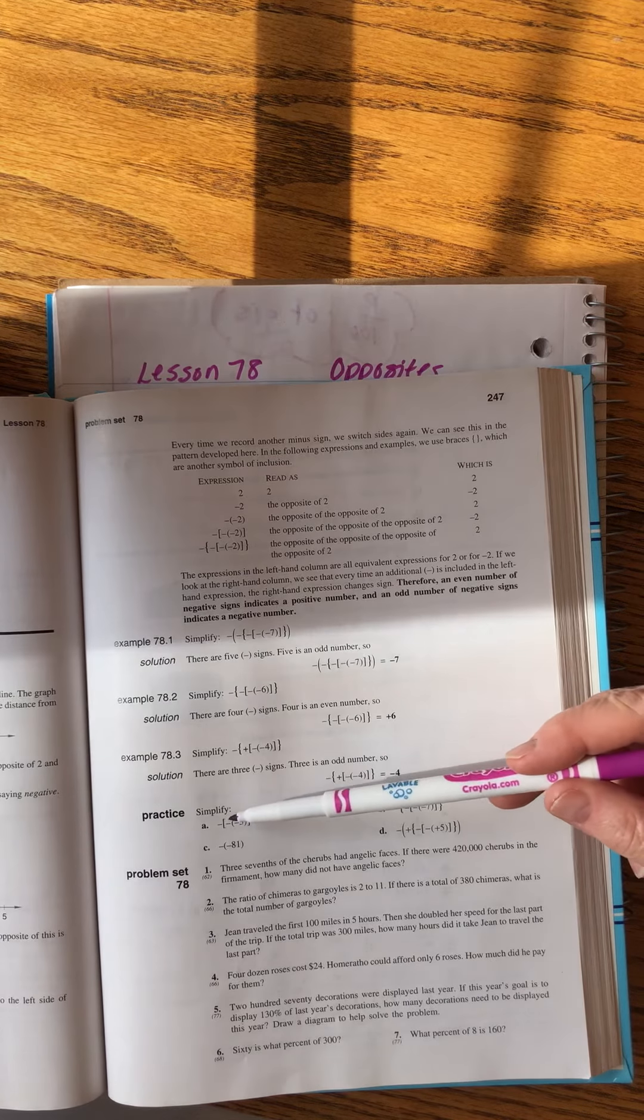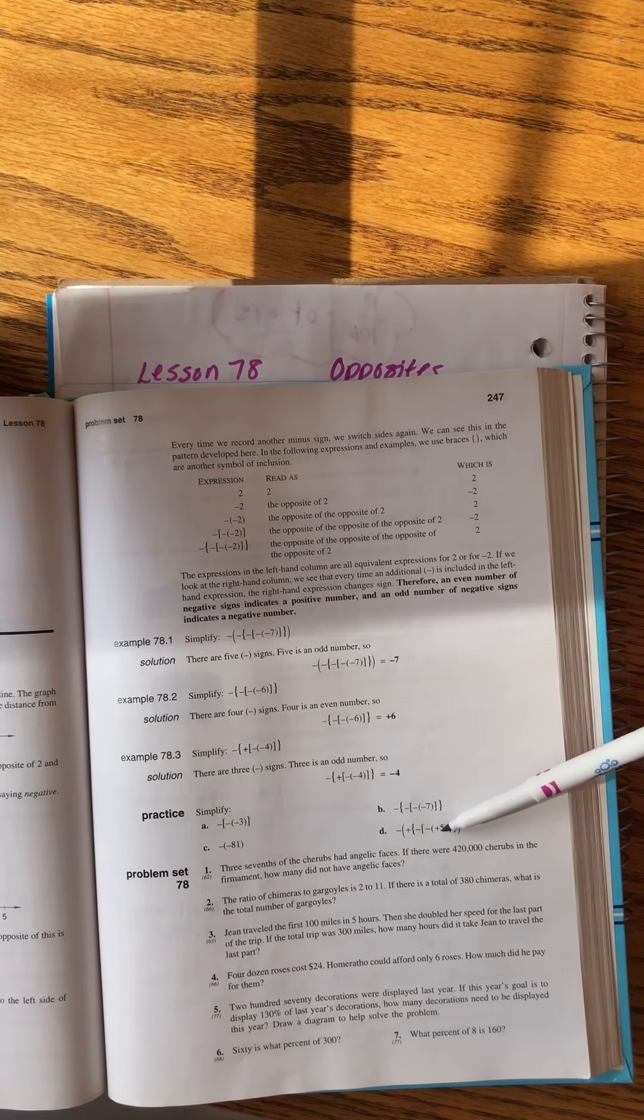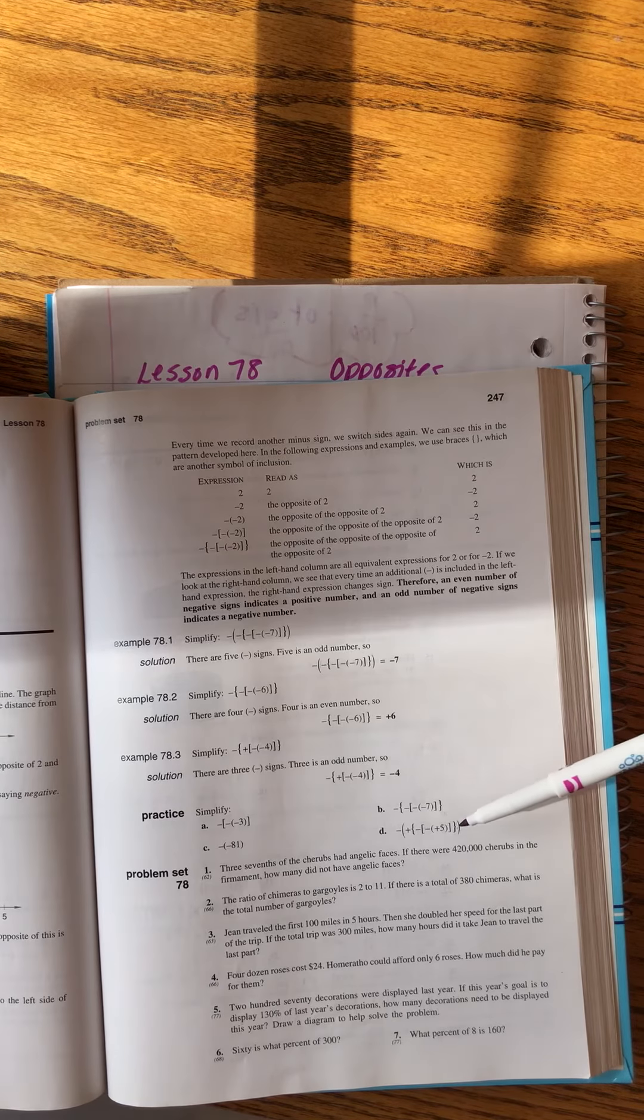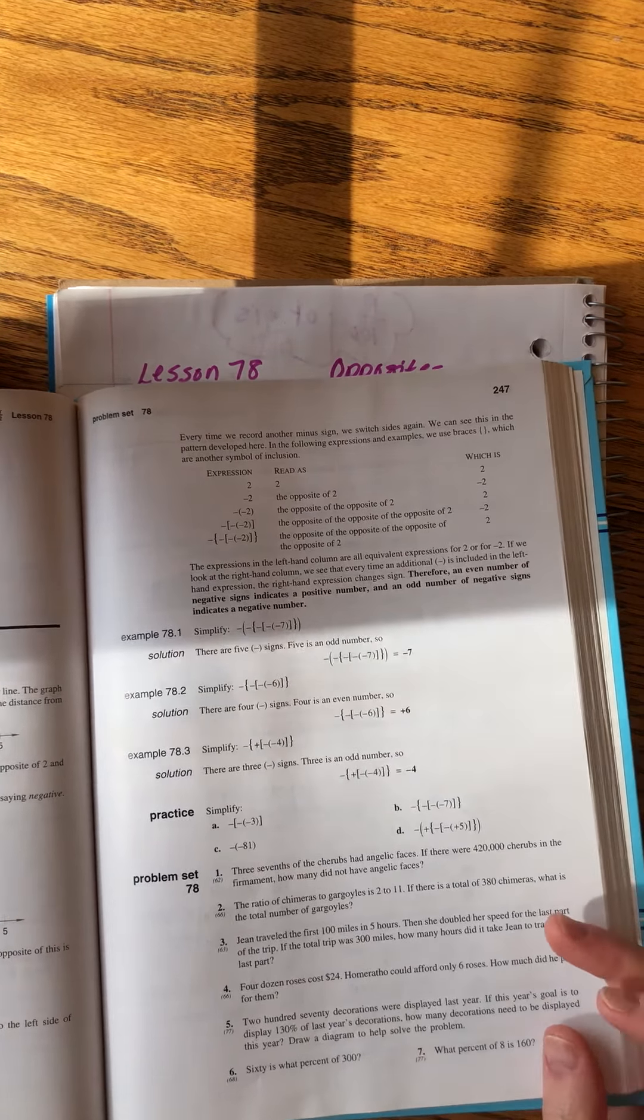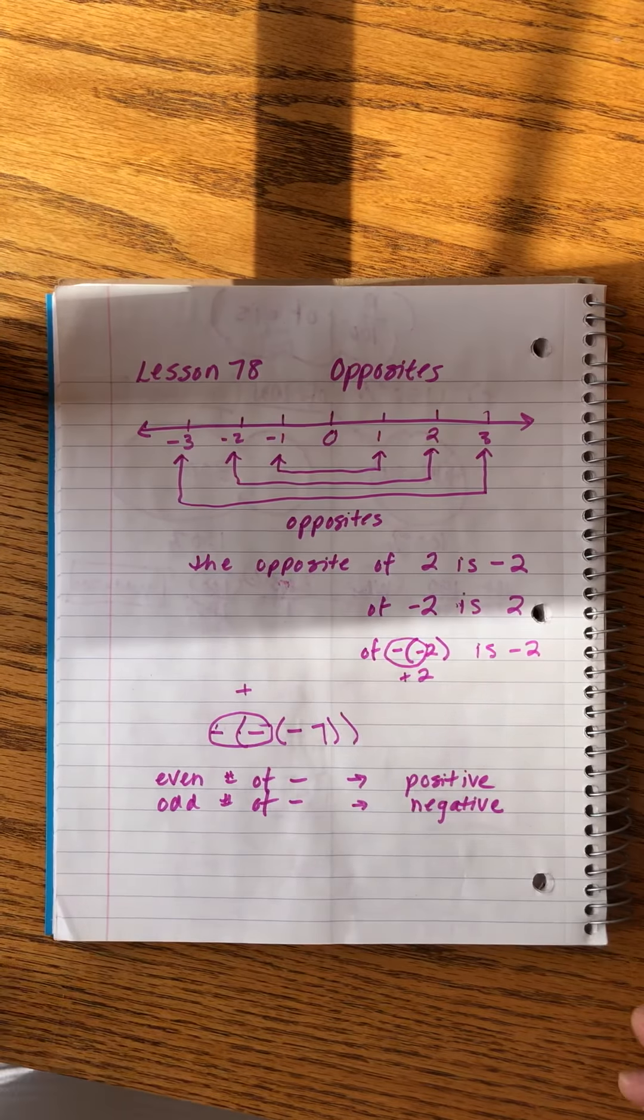All right, and then that's all you're doing for the homework problems. The practice, you just count them up. There's one with a couple positives in there. Just ignore those. Just count the negatives and you will be fine. All right, so lesson 78.